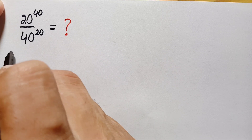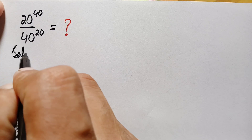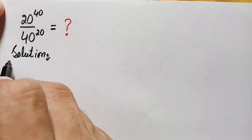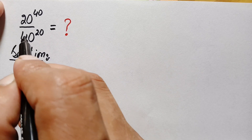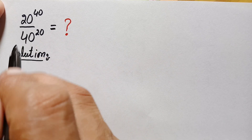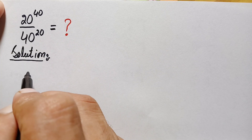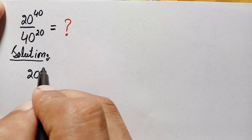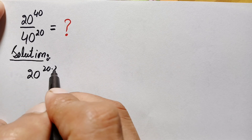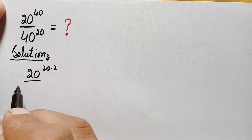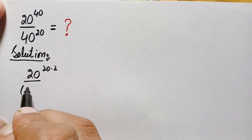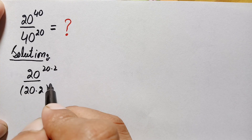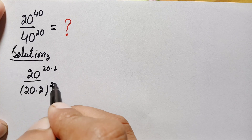Let's start our solution. In the first method, we can write this number as 20 raised to the power 40, but we can write 40 as 20 times 2. Similarly, in the denominator we can write 40 as 20 times 2, raised to the power 20.